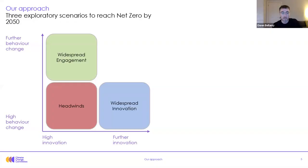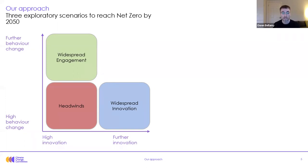In terms of the approach to the sixth carbon budget as a whole, we looked at three main scenarios for how we could get to net zero by 2050: an engagement scenario, an innovation scenario, and what we called a headwind scenario. You can see on the chart that those are splitting on the grid in terms of behaviour change and innovation.